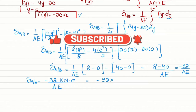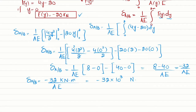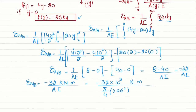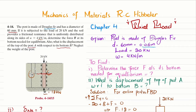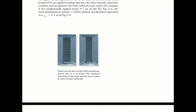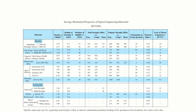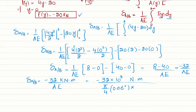Converting: minus 32 times 10³ Newton·meters. The area of the circular cross-section is pi over 4 times d squared, with d = 0.06 meters. For E, since the post is Douglas Fir, we look up the average mechanical properties table at the end of the book. Douglas Fir has E = 13.1 gigapascals = 13.1 times 10⁹ Pa. Substituting these values gives us the final displacement.